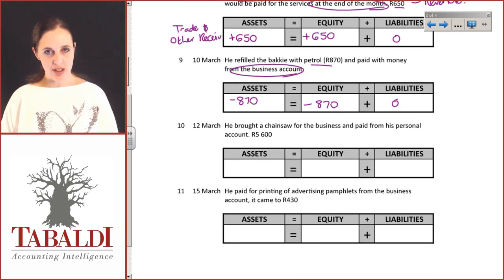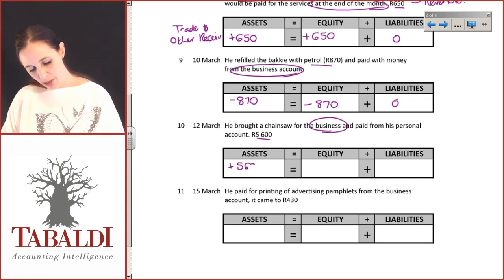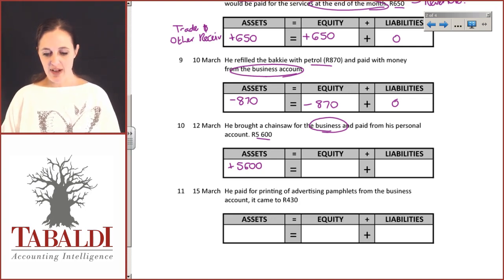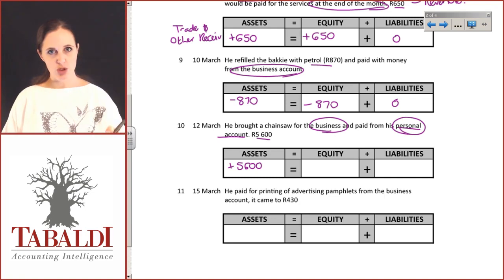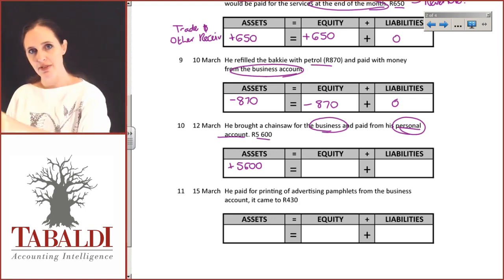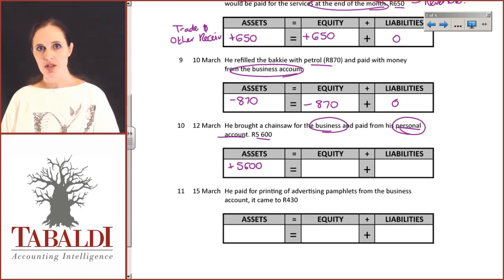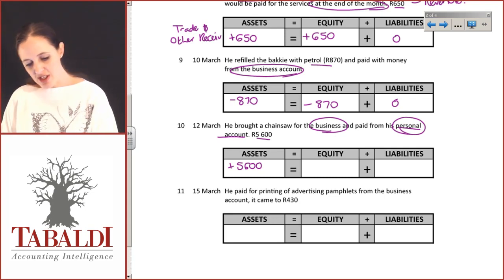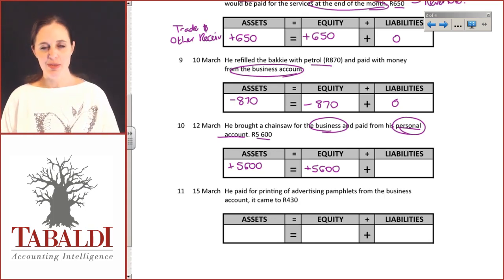He bought a chainsaw for the business and paid from his personal account — 5,600 Rand. The chainsaw is going to be used for the business and he's expecting to create income from it, so the chainsaw is equipment the business needs. We increase the assets of the business by 5,600 Rand. The bank account has been affected, but not the business's bank account — he paid from his personal account. He has taken money out of his personal bank account and added value to the business, which is basically the same as him investing 5,600 Rand into the business. So this is going to increase the owner's share in the business.